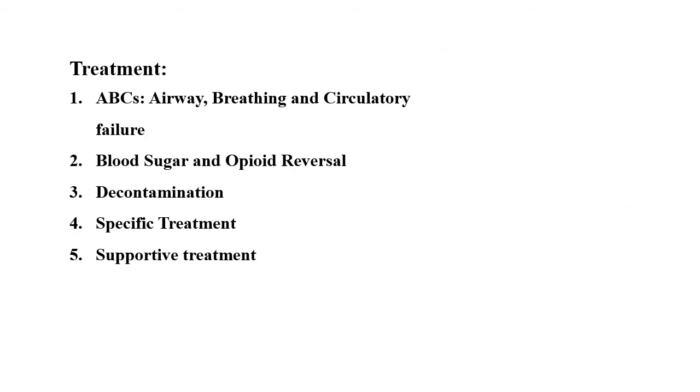Treatment includes five steps: number one is ABC, blood sugar, decontamination, specific treatment, and supportive treatment. We must maintain the functioning of vital organs while simultaneously inhibiting the absorption of poisons — this is the main goal of treatment.